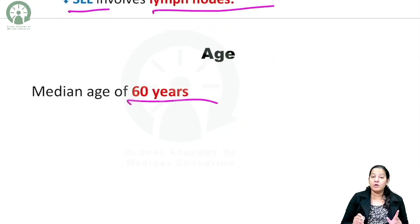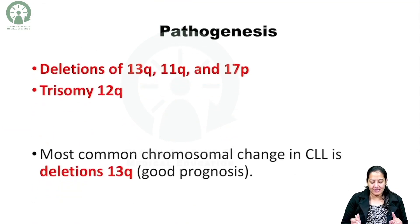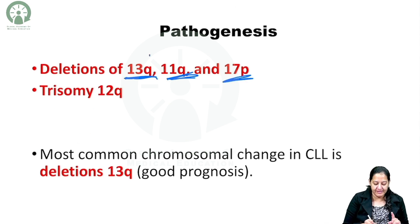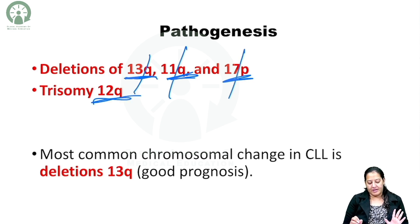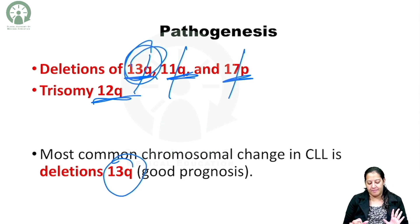CLL occurs in old age; the median age is 60. Regarding pathogenesis, there is either deletion of 13Q, 11Q, or 17P, or there is trisomy of 12Q. Among these, 13Q has the best prognosis and is also the most common. So if you want to learn one: the most common with good prognosis is 13Q.